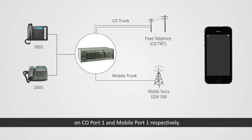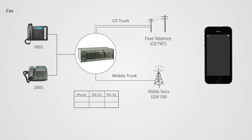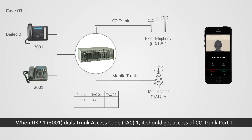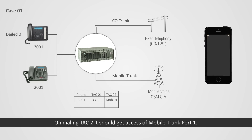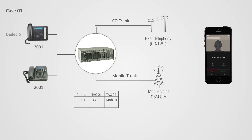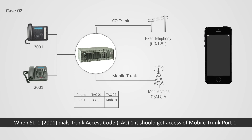Case 1: when DKP1 (extension 3001) dials trunk access code TAC1, it should get access to CO trunk port 1; on dialing TAC2, it should get access to mobile trunk port 1. Case 2: when SLT1 (extension 2001) dials trunk access code TAC1, it should get access to mobile trunk port 1.